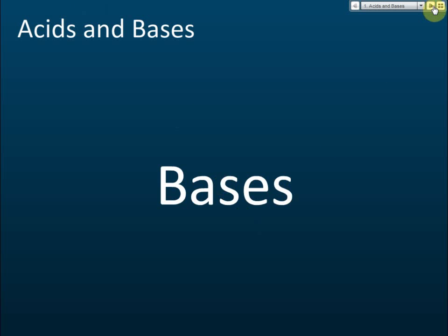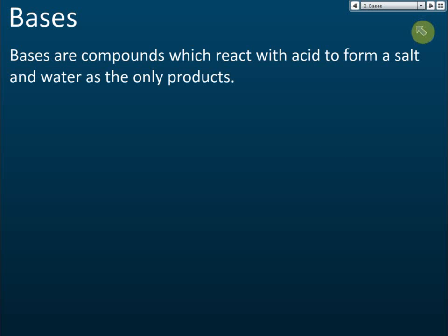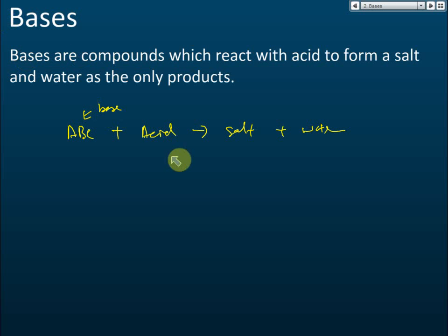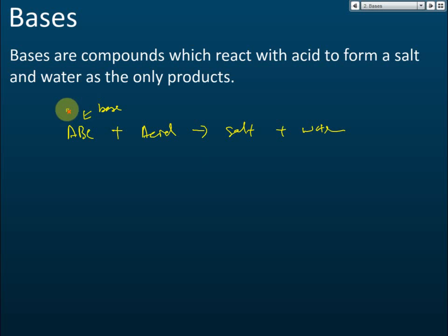Bases are compounds which react with acid to form salt and water as the only products. So any substance that reacts with acid to produce salt and water is called a base. This process is called neutralization — that is the definition of a base.